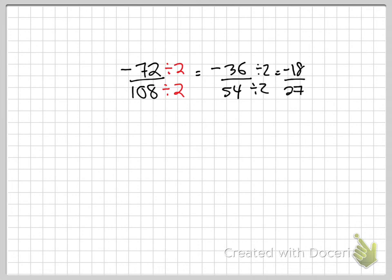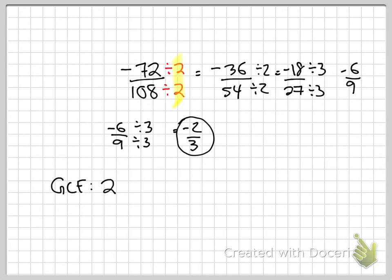At this point, 27 is definitely an odd number. But you might notice that they're both divisible by 3. So, this gives me negative 6 over 9. Once again, I can divide by 3. And that gives me negative 2 over 3. So, now let's build our GCF. We divided by 2, and then we divided by 2 again, and then we divided by 3, and then we divided by 3 again. So, 2 times 2 is 4, 4 times 3 is 12, 12 times 3 is 36. So, our greatest common factor in this problem is 36.